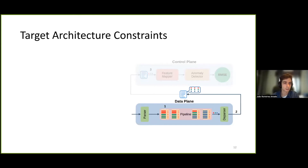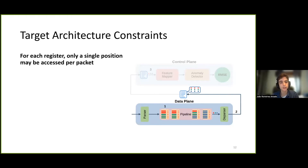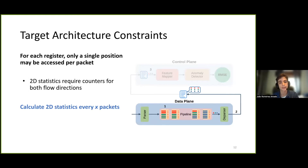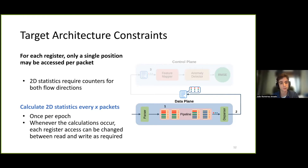Moving on to the target architecture constraints encountered during implementation. First, for each packet, the Tofino architecture only allows access to a single position for each register. This limits the calculation of 2D statistics, which require counters for both flow directions, as we would have to access several registers twice in different positions to both update the current packet counters and read the counters for the other flow direction. Our solution relies on a mechanism where the calculation of 2D statistics is performed every x packets, or once per epoch. In this way, whenever the 2D statistics are to be calculated, the position to be accessed for each register can be changed to allow all the required values to be obtained.